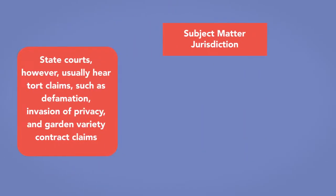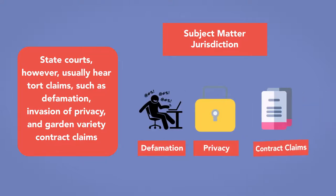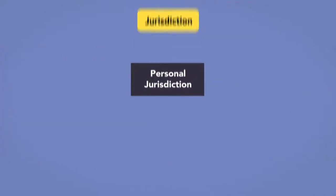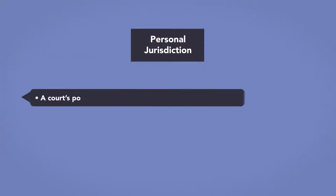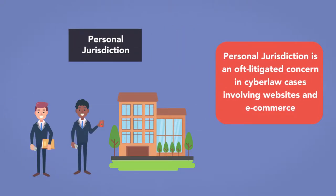State courts, however, usually hear tort claims such as defamation, invasion of privacy, and garden variety contract claims. Second is personal jurisdiction — a court's power to bind a defendant with its ruling. Personal jurisdiction involves a defendant's personal rights and/or property interests, such as determining who owns a parcel of real estate, and is an oft-litigated concern in cyberlaw cases involving websites and e-commerce.